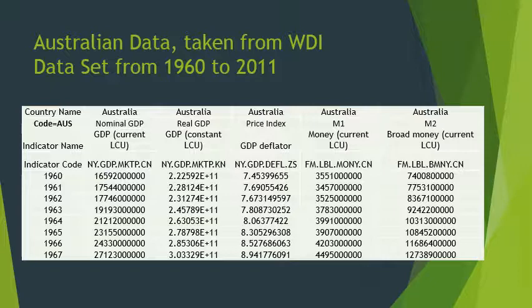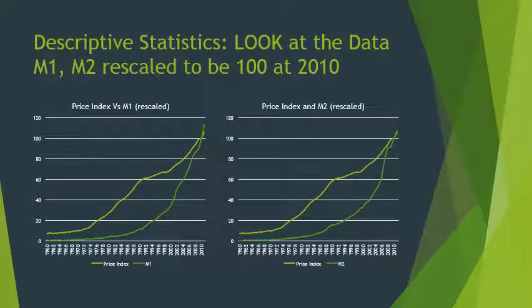To 2011 in this dataset. The main idea of the quantity theory is that prices change in proportion to the amount of money. Here we just plot the price series — the price index — versus the money series. There are two money series: money and broad money, so we make two plots of price against money.